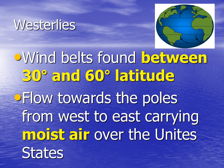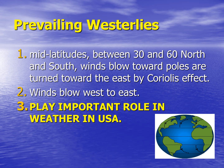In westerlies, wind belts are found between 30 degrees and 60 degrees latitude. They flow toward the poles from west to east, carrying moist air over the United States. Prevailing westerlies occur at mid-latitudes — between 30 and 60 degrees — which could be north or south of the equator. The winds blow toward the poles and are turned toward the east by the Coriolis effect, blowing west to east. The prevailing westerlies play a very important role in weather in the United States.